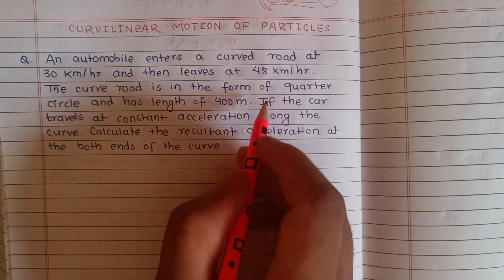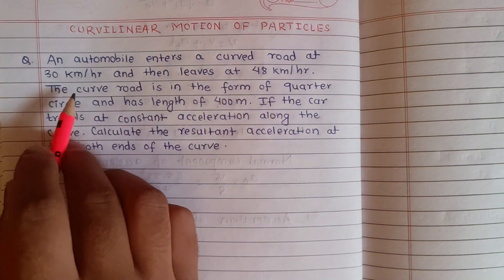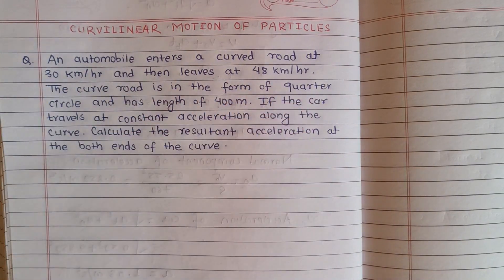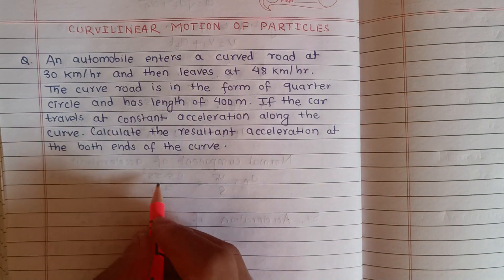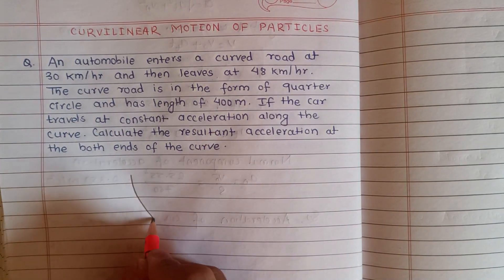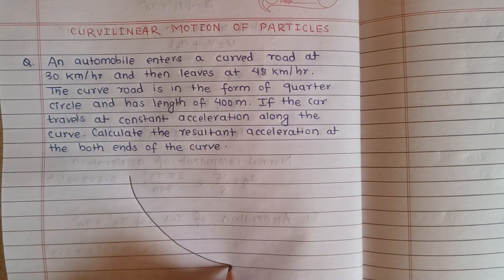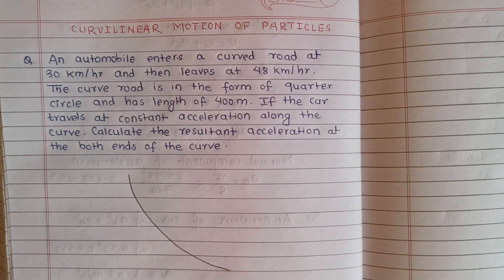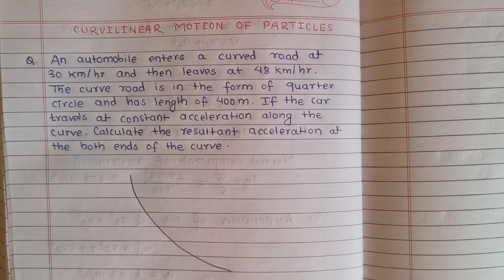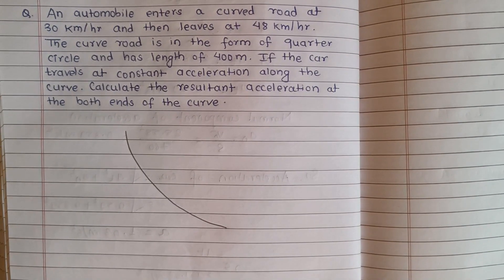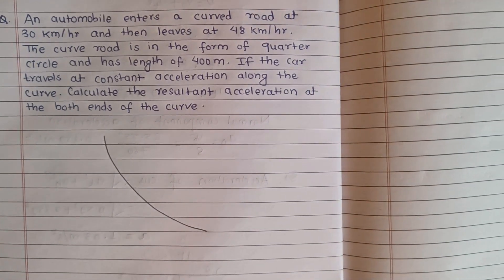So the curved road is in the form of a quarter circle. Length is 400 meters. This is the quarter circle, and the length — that is, the arc distance along the curve — is 400 meters.